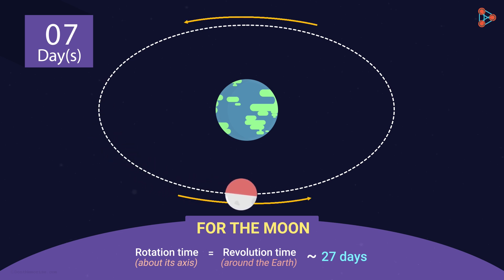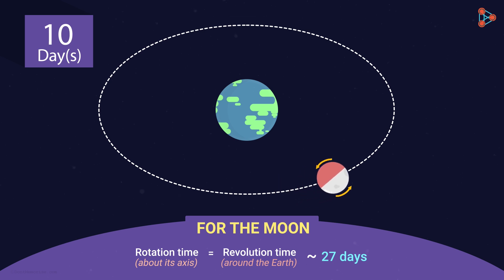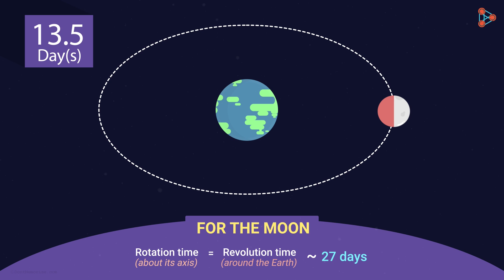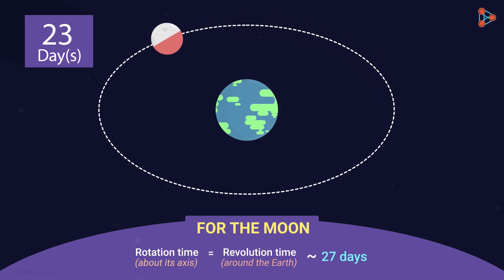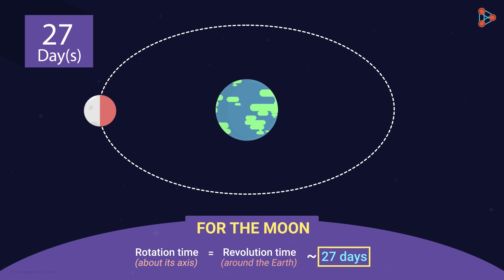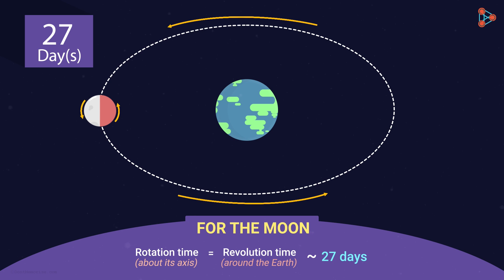Notice that the moon is revolving around the earth and rotating about its axis as well. After about half the time period, the moon is here and the earth has only seen the near side. The moon continues to do so for the remaining time period and ends the revolution back at the same point where it started. In this same time period of around 27 days, it rotated once about its axis and revolved once around the earth as well.